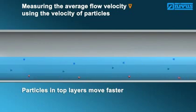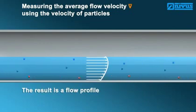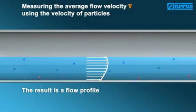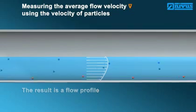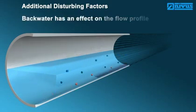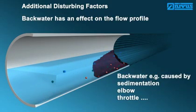From this, a so-called flow profile can be obtained. This profile depicts the flow velocities related to the levels. Miscellaneous factors affect this flow profile, disturbing free discharge or may result in the formation of backwater. Such disturbing factors may be pipe roughness and varying sedimentation, solid concentration, or influences due to construction such as elbows and throttle equipment.